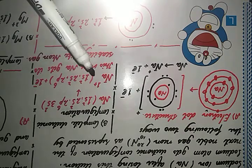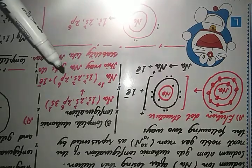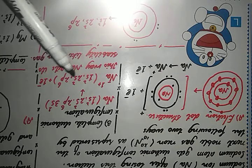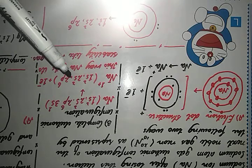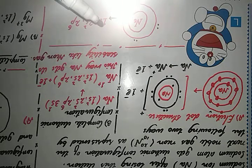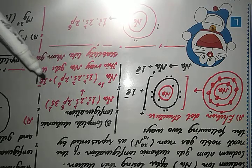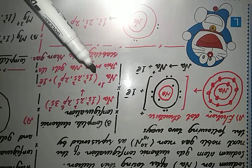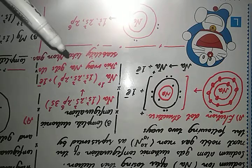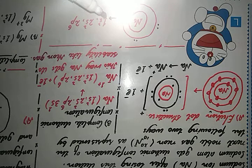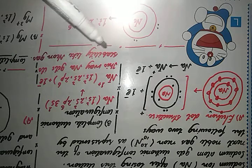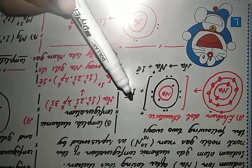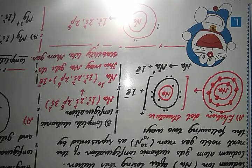After losing that 3s electron, sodium's electronic configuration becomes 1s² 2s² 2p⁶. Neon also has this very configuration: 1s² 2s² 2p⁶. That one electron is lost by the sodium atom and it becomes the sodium ion, or cation. This way sodium gets its stability like neon gas. This is the electronic configuration method for representing cations.